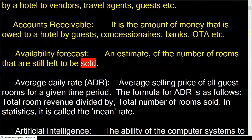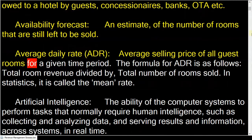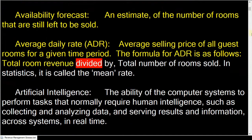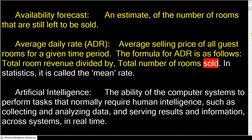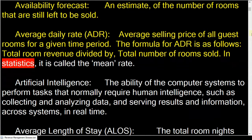Average daily rate (ADR) is the average selling price of all guest rooms for a given time period. The formula for ADR is: total room revenue divided by total number of rooms sold. In statistics, it is called the mean rate.